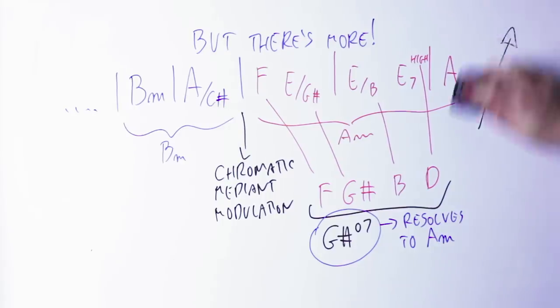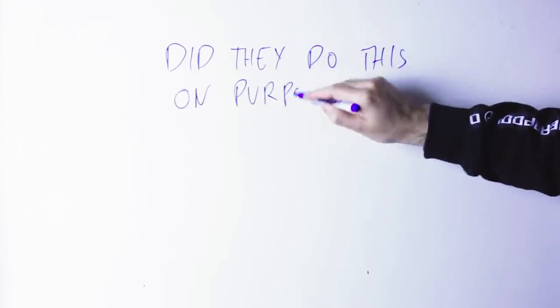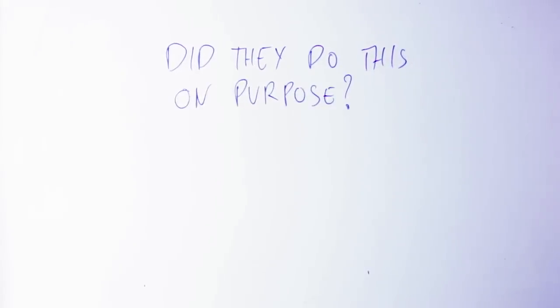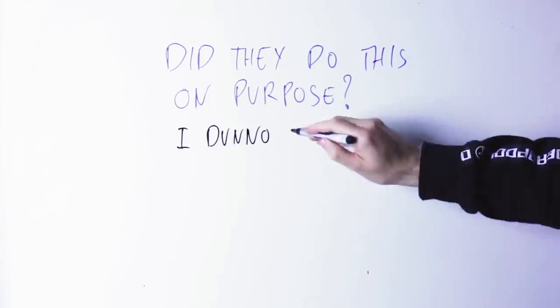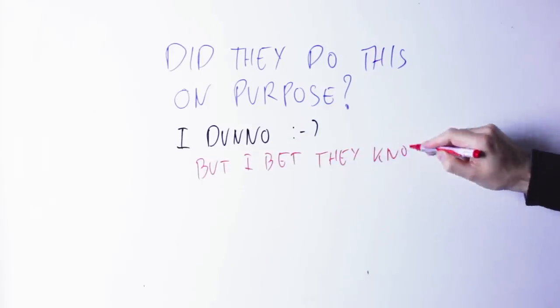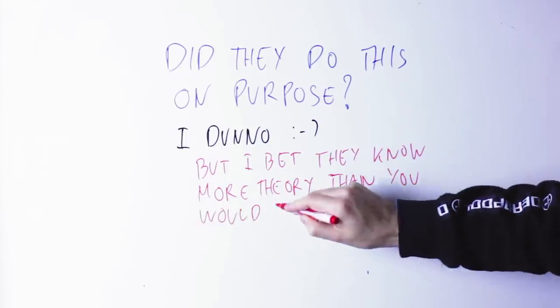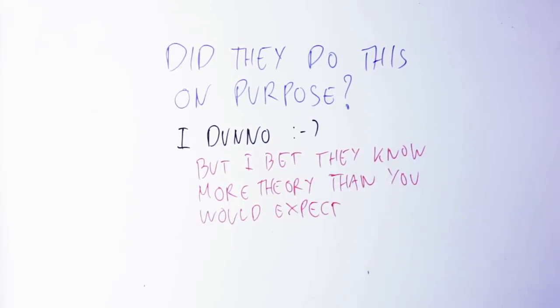Of course, the question everybody is asking right now is, did Metallica do all this on purpose? Did Metallica actually know all this theory and applied it deliberately? The answer is, I don't know. They for sure know way more theory than they let out, and honestly Cliff Burton was very competent at music theory too. But maybe, maybe they did all this by ear, or maybe they were thinking about the 6th and the 5th chord but they didn't really think about the diminished chord at the bass.